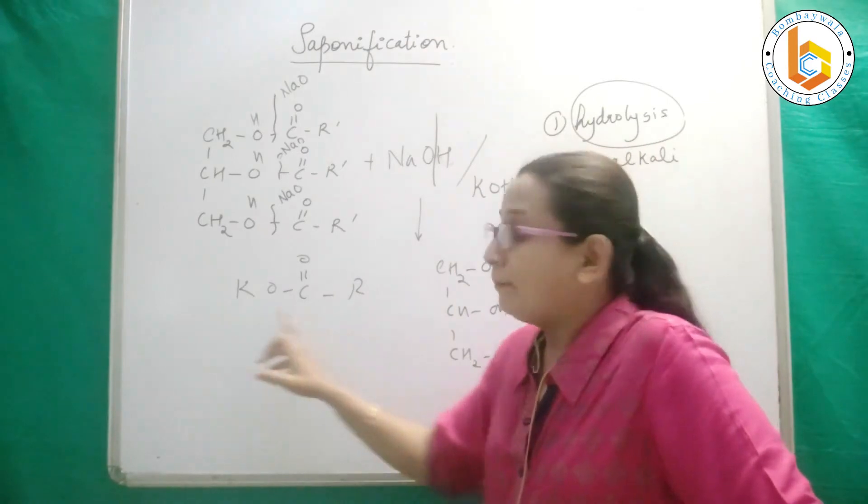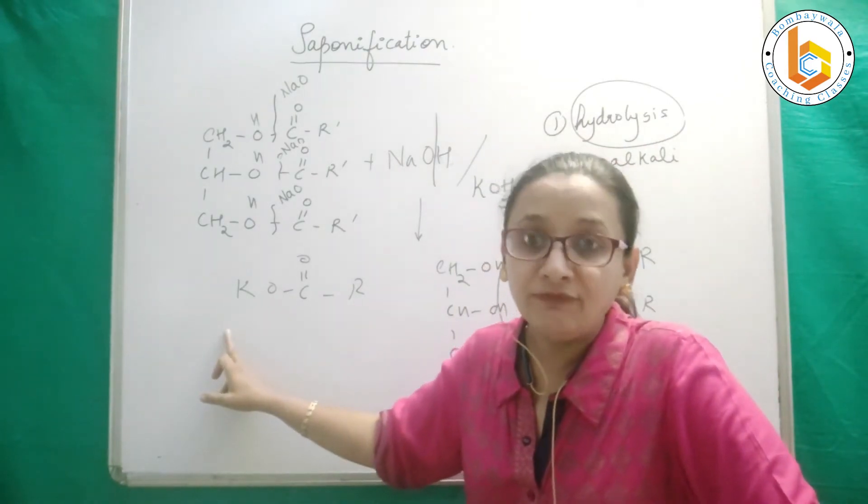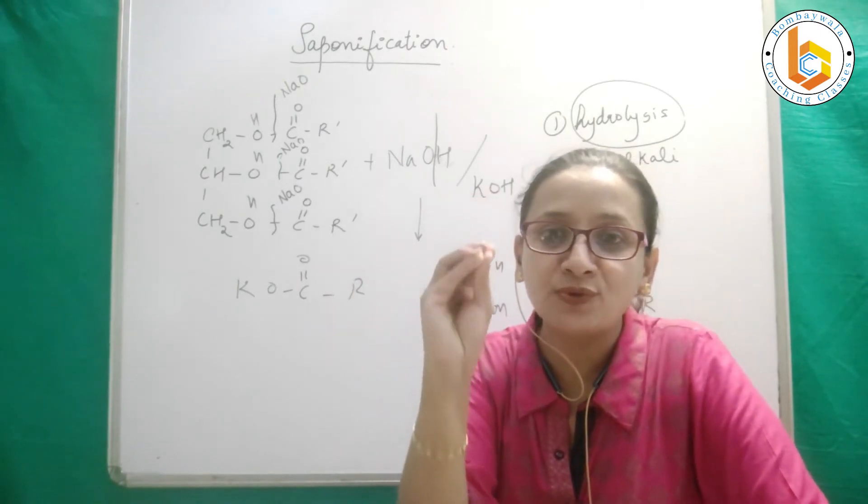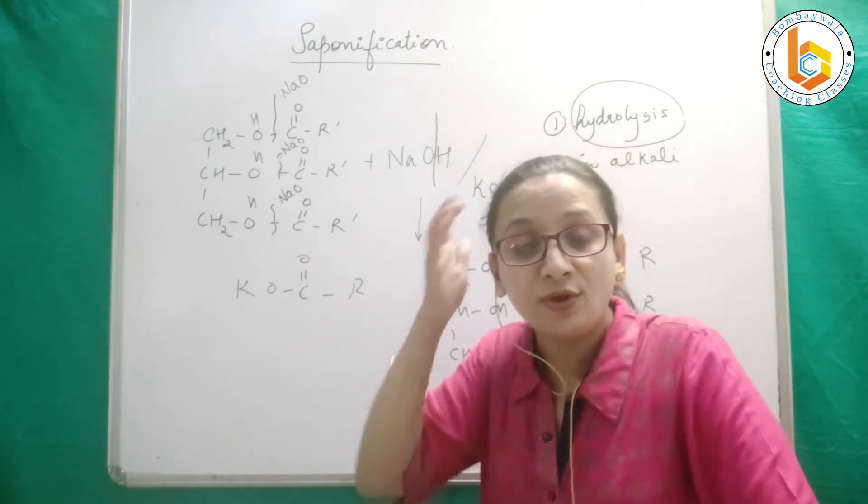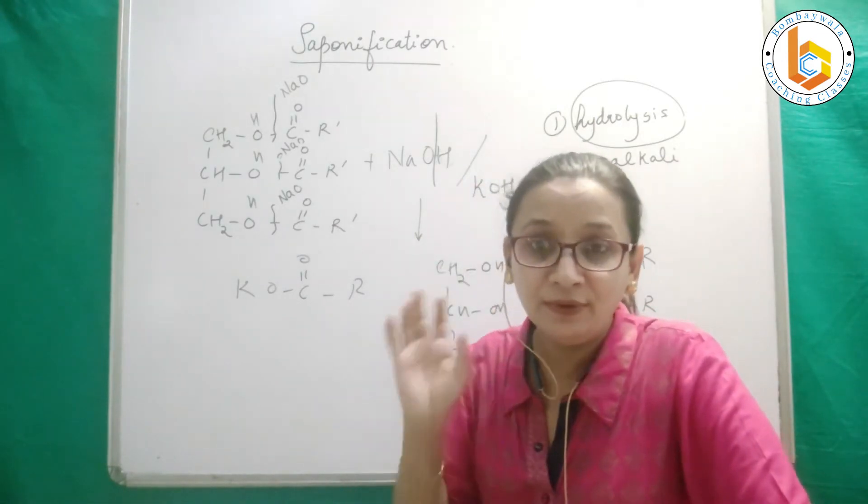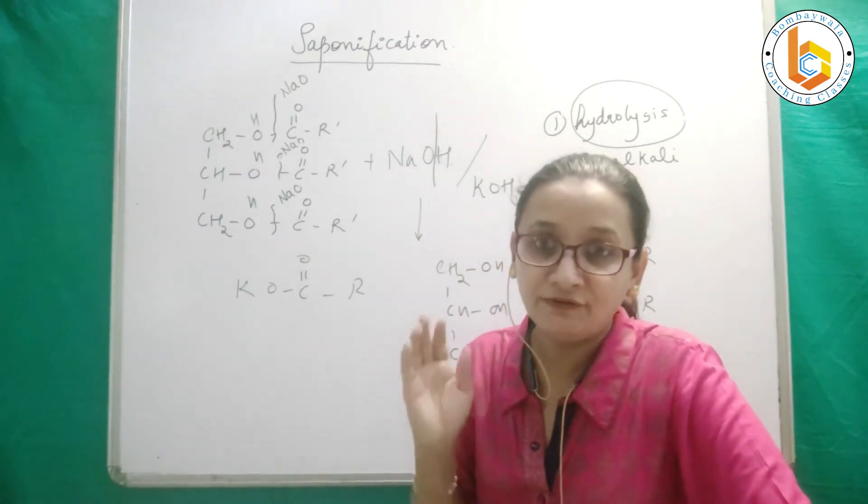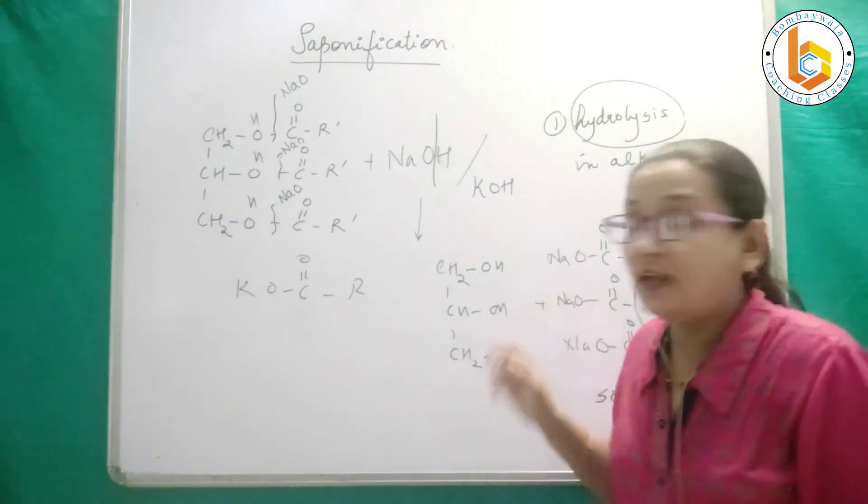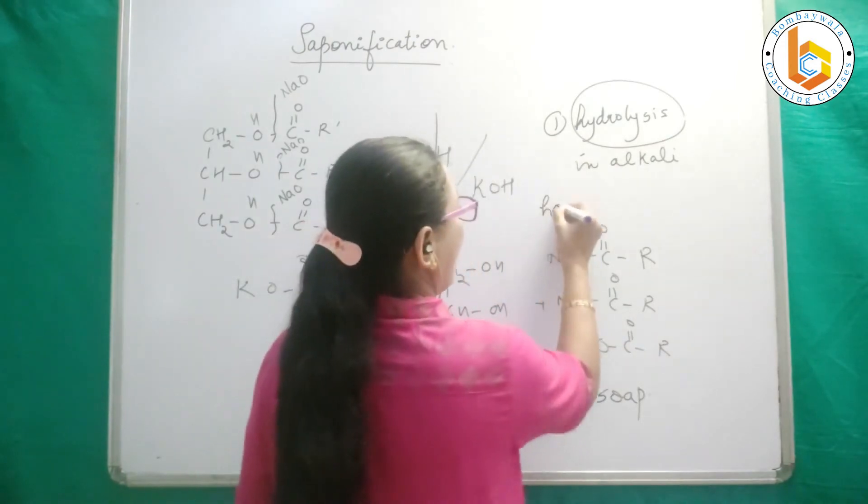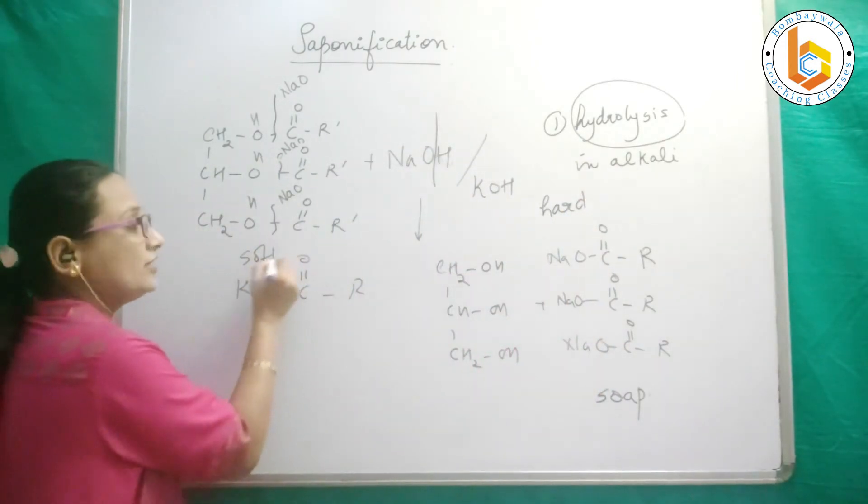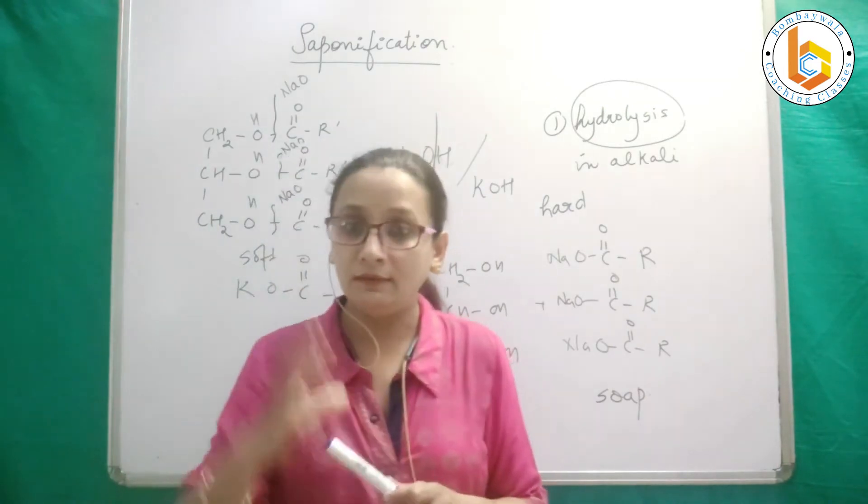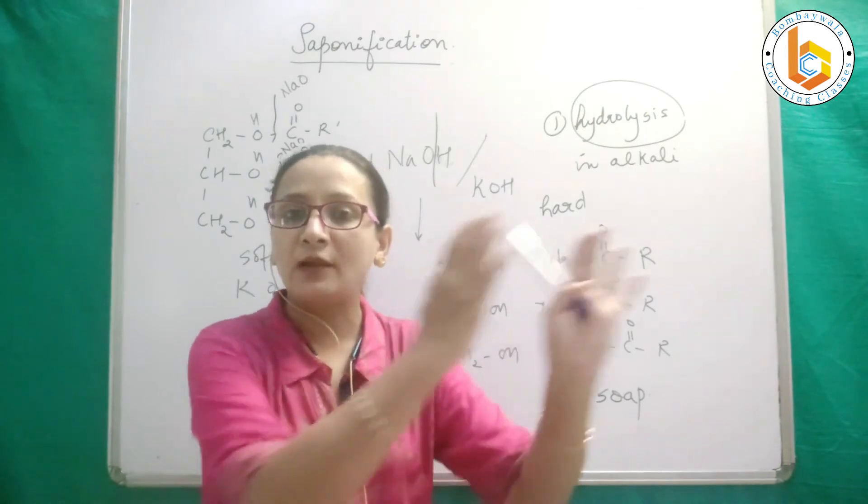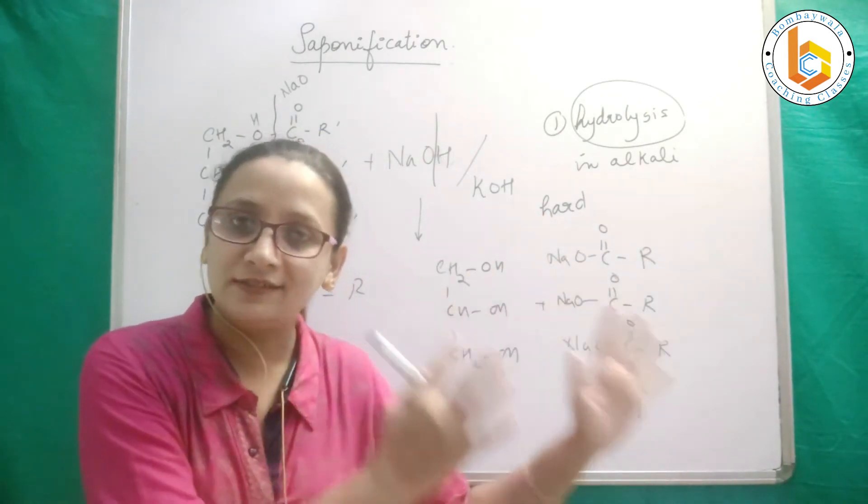Remember dear students, when potassium is used with fatty acids to form soap, then this soap is a soft soap. Such a soap is used in your shampoos. Whereas those soaps which contain sodium metal, they are comparatively hard soaps. These are used in your normal bar soaps. Sodium salt of fatty acid is used, and potassium salt of fatty acids make a soft soap.